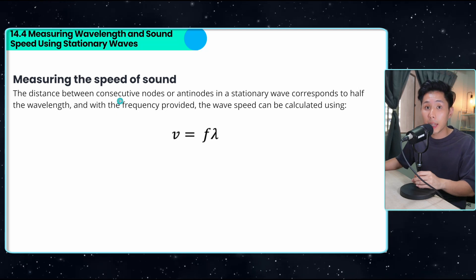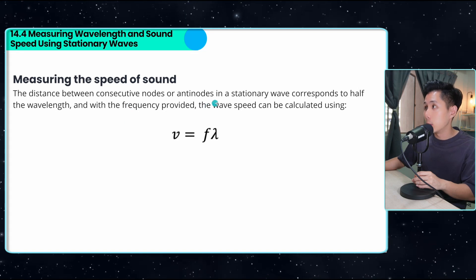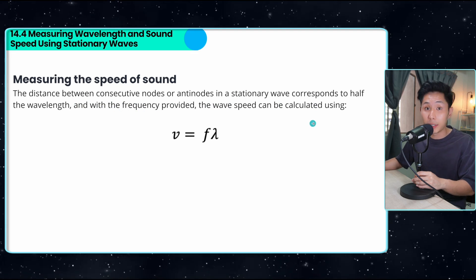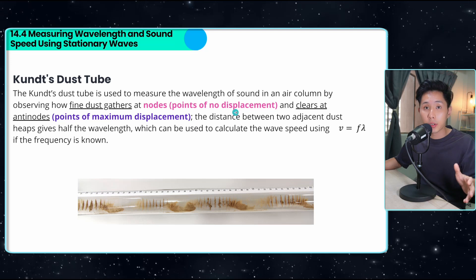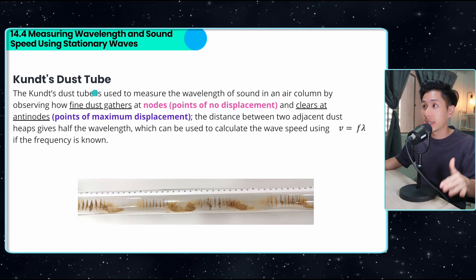Now let's look into the last part of the lecture, measuring the speed of sound. The distance between consecutive nodes and antinodes correspond to half the wavelength. And with the frequency provided, we can calculate the wave speed, which is something that we have done just now. But how do scientists measure where is the nodes and where is the antinodes? That's when you have the Kundt dust tube.